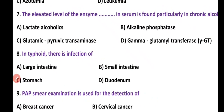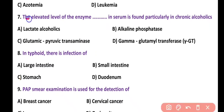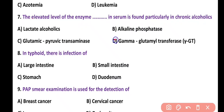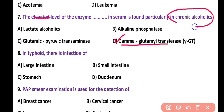Question 7. The elevated level of enzyme in the serum found particularly in chronic alcoholics: lactate, alkaline phosphatase, glutamic pyruvate transaminase, or gamma-glutamyl transferase. Correct answer is option D. Gamma-glutamyl transferase is the enzyme present at elevated levels in the serum of a chronic alcoholic patient.